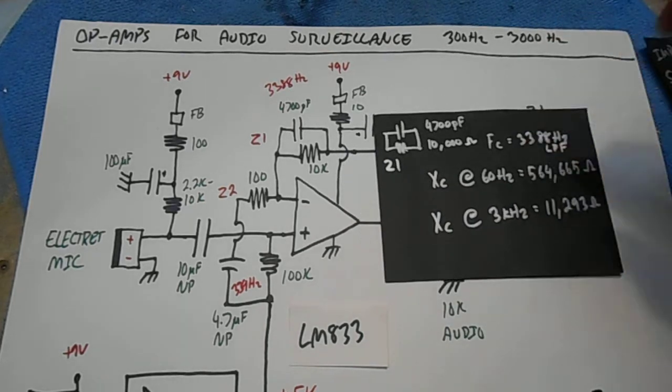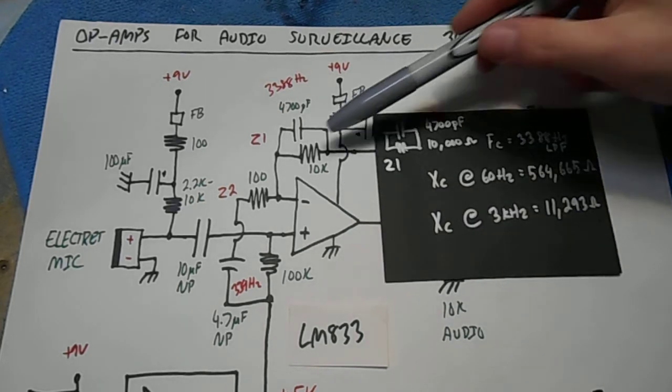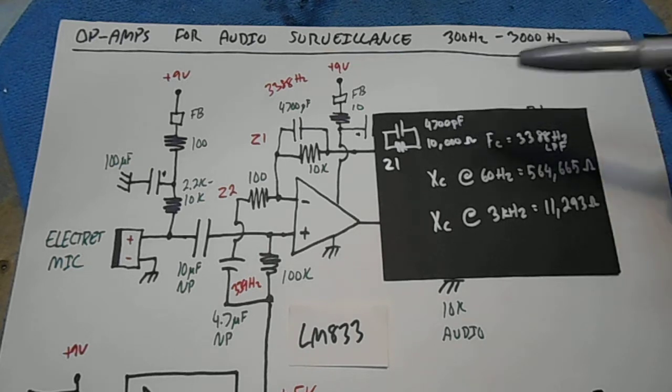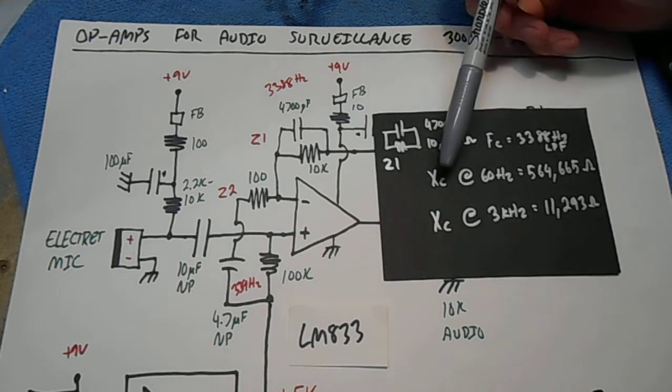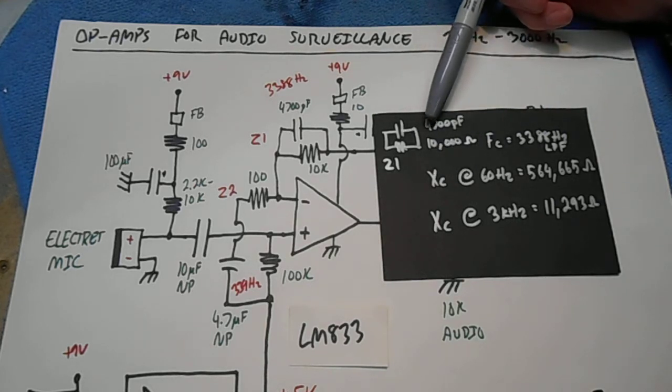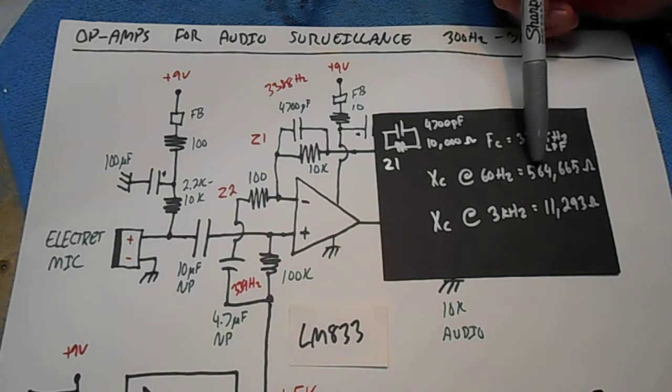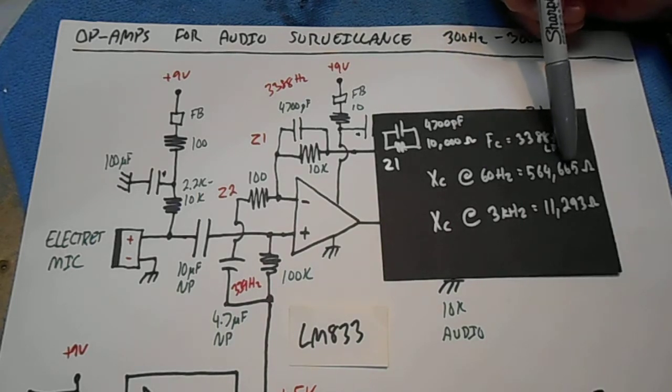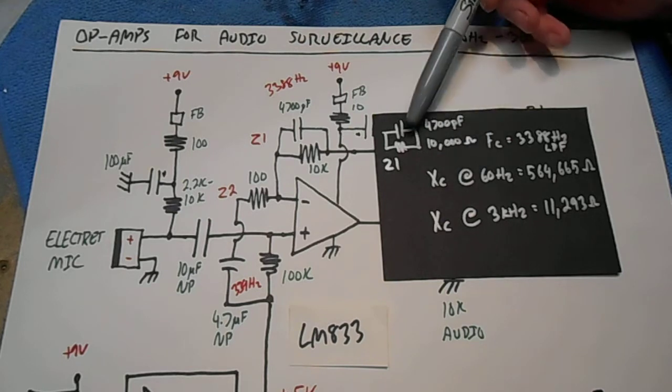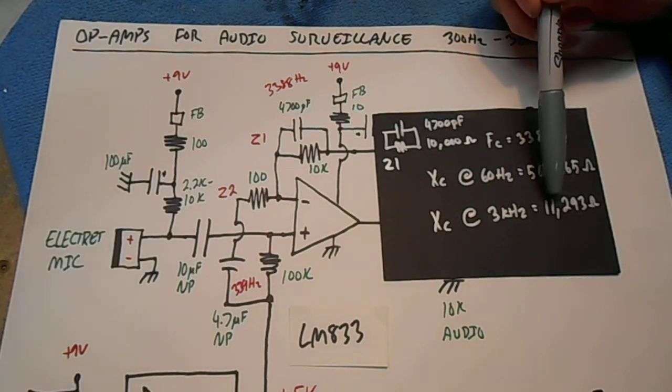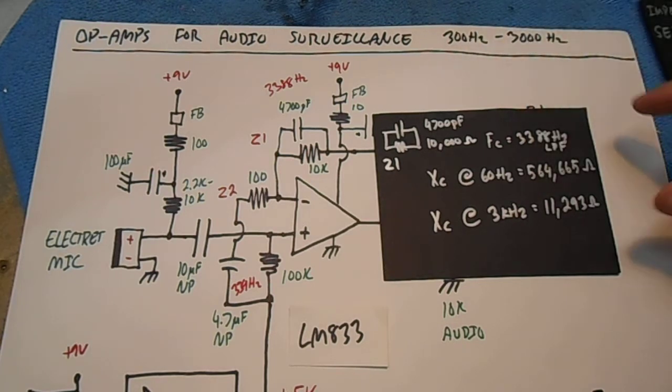So for our example, in our feedback network here, we have a 4,700 picofarad capacitor in parallel with a 10,000 ohm resistor. The reactance of the 4,700 picofarad capacitor at 60 hertz is 564,665 ohms, while that same capacitor at 3,000 hertz only has 11,293 ohms of reactance.